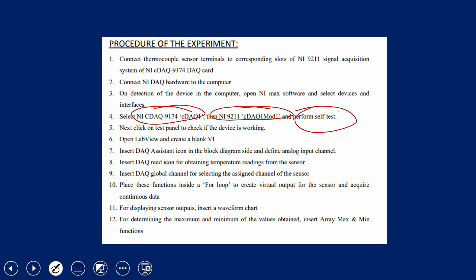Open LabVIEW and create a blank VI. Insert a DAQ assistant icon in the block diagram and define the analog input signal. Insert a DAQ read icon for obtaining temperature readings from the sensor. Insert a DAQ global channel for selecting the assigned channel of the sensor. Place these functions inside a for loop for continuous data acquisition. For displaying sensor output, insert a waveform chart, or you can use an array and display the data in an Excel sheet. You can also determine the maximum and minimum values from the sensor data.